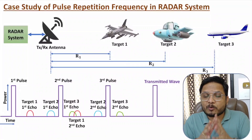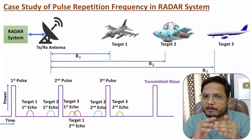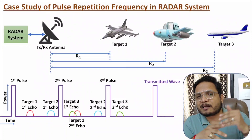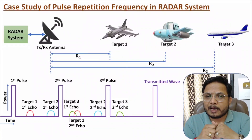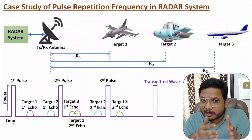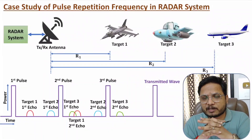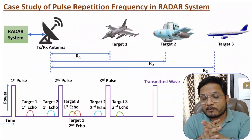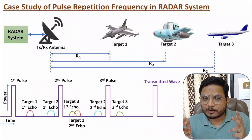So the operator's job is to identify the expected range of the target and make the selection accordingly. If the expectation is for higher range targets, the value of pulse repetition frequency should be lower. If the operator expects targets at shorter range, a higher value of pulse repetition frequency can be selected. I hope you are getting all the points — if anything, please note it down in the comment section. Thank you so much for watching this video.